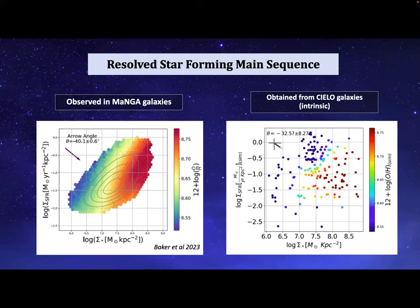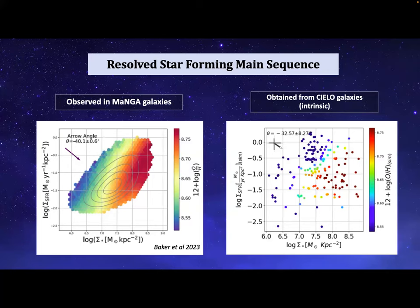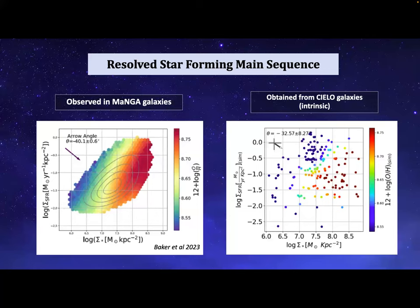Introducing the resolved mass-metallicity relation: the surface star formation rate density as a function of stellar mass surface density, from MaNGA observations. There is a correlation between stellar surface density, star formation rate, and oxygen-over-hydrogen abundance: less enriched material at lower stellar mass density spaxels, and higher metallicity at higher stellar mass density spaxels. We first measure this directly from the simulation — using the abundances from the simulation, the star formation rate density, and the stellar mass surface density — and we get similar trends, with a comparable secondary correlation on the abundances.